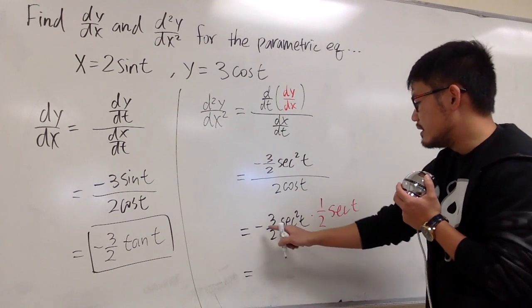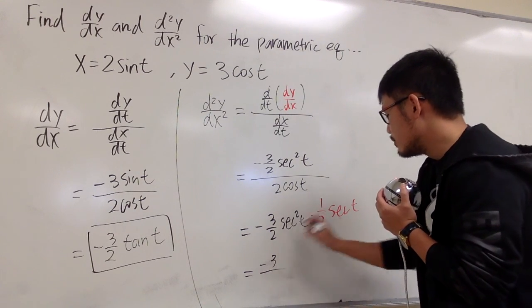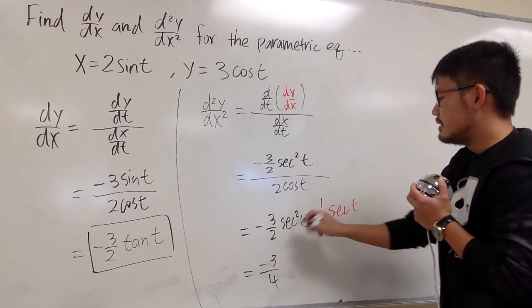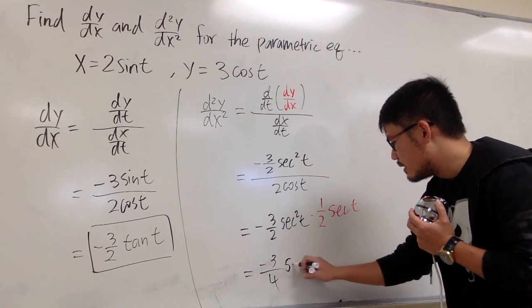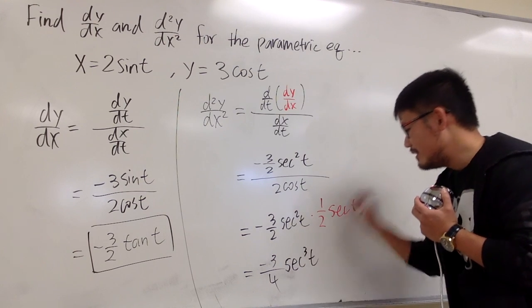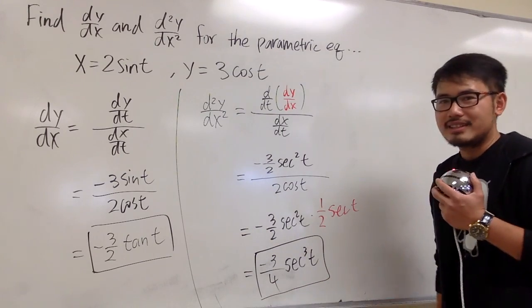All in all, you see that the numbers can be multiplied, negative 3 altogether, over 2 times 2, which is 4, secant squared times another one, we have secant to the third power t. And this is it. This is d²y/dx².